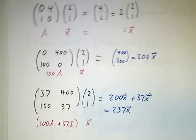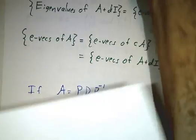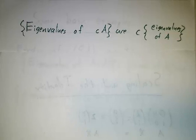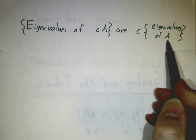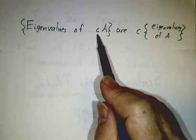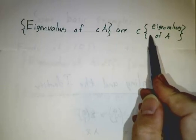So let's summarize what we've learned from this particular example. If you take any matrix and scale it up by a factor of c, you just scale up the eigenvalues by a factor of c. If you take 100 times the matrix, the eigenvalues are 100 times as big.